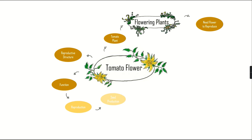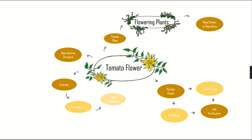It's also important to mention that tomato flowers are what we can call perfect flowers. That means they have both a male organ and a female organ located in the same flower, which is a significant advantage because it allows for self-fertilization. So the basic structure of the tomato flower is a perfect flower with both male and female organs, and its function is reproduction.